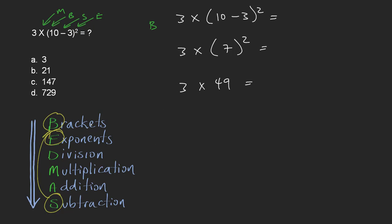So we've dealt with the brackets, we've dealt with the exponent, and now we're going to have to do multiplication. Actually, we did brackets and subtraction here. So now it's time for multiplication. So 3 times 49 is 147. And so the answer is C.